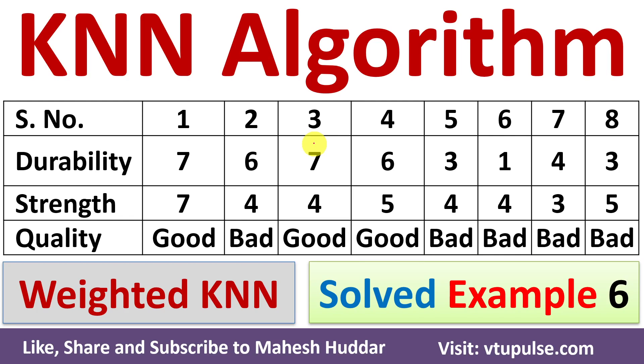Welcome back. In this video I will discuss how to apply the KNN algorithm to a given dataset to classify a new example into one of the classes with a simple solved example. A factory is producing papers. The quality control unit applies two types of testing — durability test and strength test — to assess the quality of the paper. There are eight observations, each assigned either 'good' or 'bad' quality.